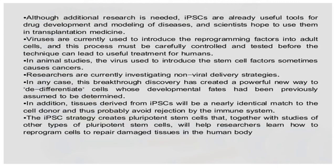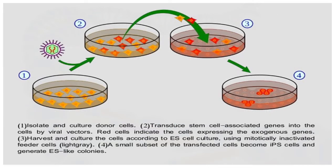There is a small difference between stem cells and cancer cells in terms of cell division variation. In addition, tissue derived from iPSCs will be a nearly identical match to the cell donor and thus will probably avoid rejection by the immune system. Cells are transduced through a virus — these are called transduced cells — and then cultured in a medium where the transduced cells can grow.